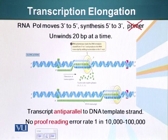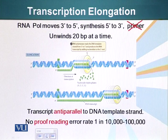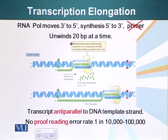Once the RNA polymerase has landed on the promoter, it starts incorporating nucleotides. These are RNA nucleotides, not DNA nucleotides — RNA polymerase cannot use the DNA nucleotides.